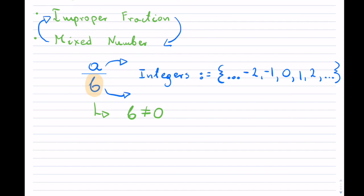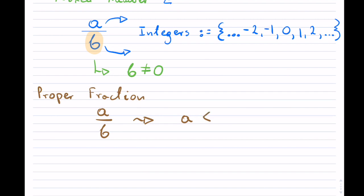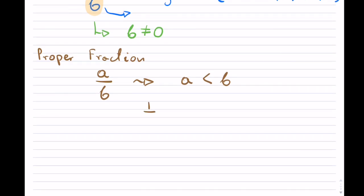So, a proper fraction — if you want to be able to distinguish between a proper fraction and an improper fraction — because we write fractions in the format A over B, what makes this fraction proper is simply the fact that A, the numerator on top, must be smaller than the denominator at the bottom. For instance, 1 over 2 would be a proper fraction because 1 is smaller than 2. 4 over 11 is also a proper fraction; 4 is smaller than 11.